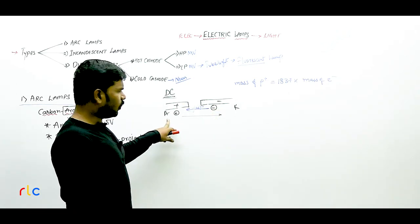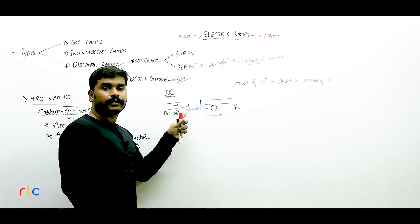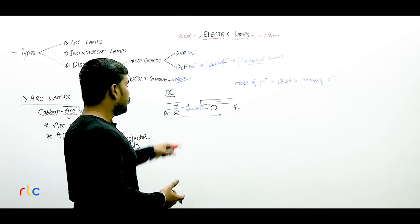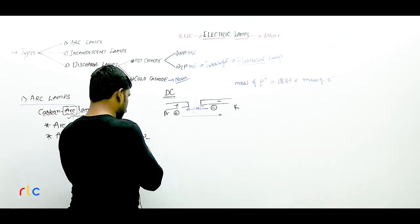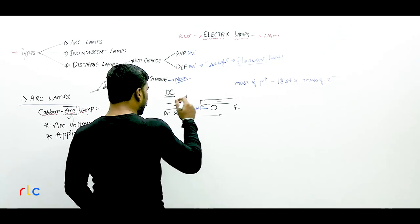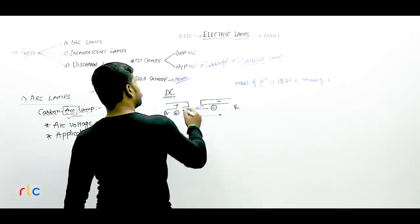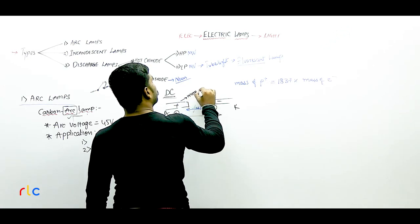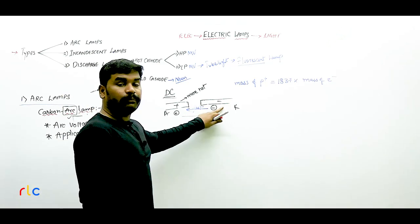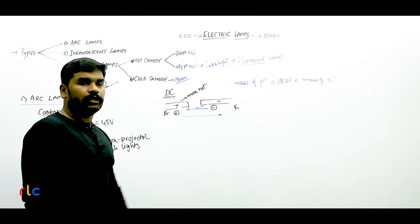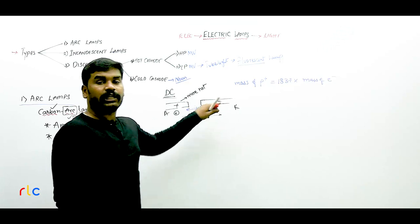When you observe anode and cathode, more heat generation occurs at the anode because high-velocity electrons are striking it. Due to high velocity, kinetic energy and collision energy are greater there. So when arc is formed from DC supply, the positive plate or anode is always more hot compared to the negative plate, which is relatively cooler. The electrodes used in a carbon arc lamp are made of carbon, which is a non-metallic conductor of electricity.